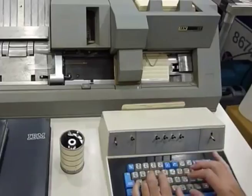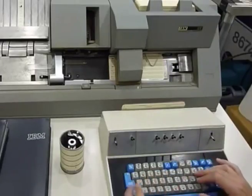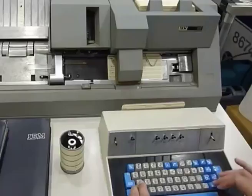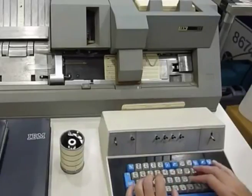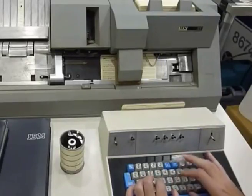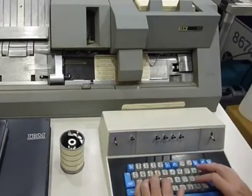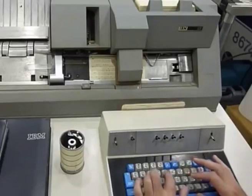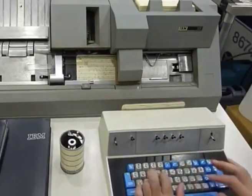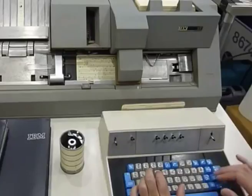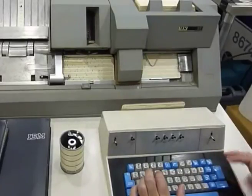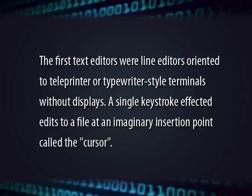Before text editors existed, computer text was punched into cards with key punch machines. The physical boxes of these thin cardboard cards were then inserted into a card reader. Magnetic tape and disk card image files created from such card decks often had no line separation characters at all and assumed fixed-length 80-character records. The first text editors were line editors oriented to teleprinter or typewriter style terminals without displays.